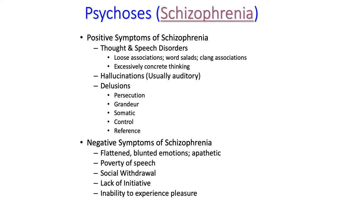Some schizophrenics can have somatic delusions, where they have unrealistic ideas about their body and what it can do — for example, believing they can stop their heart at will or that they can fly. Delusions of control occur when a person has unrealistic ideas about their ability to control something, or beliefs about being controlled by something else. Classic examples include people thinking that aliens have implanted a chip in their brain or that they're being controlled by mind control from someone in another country.